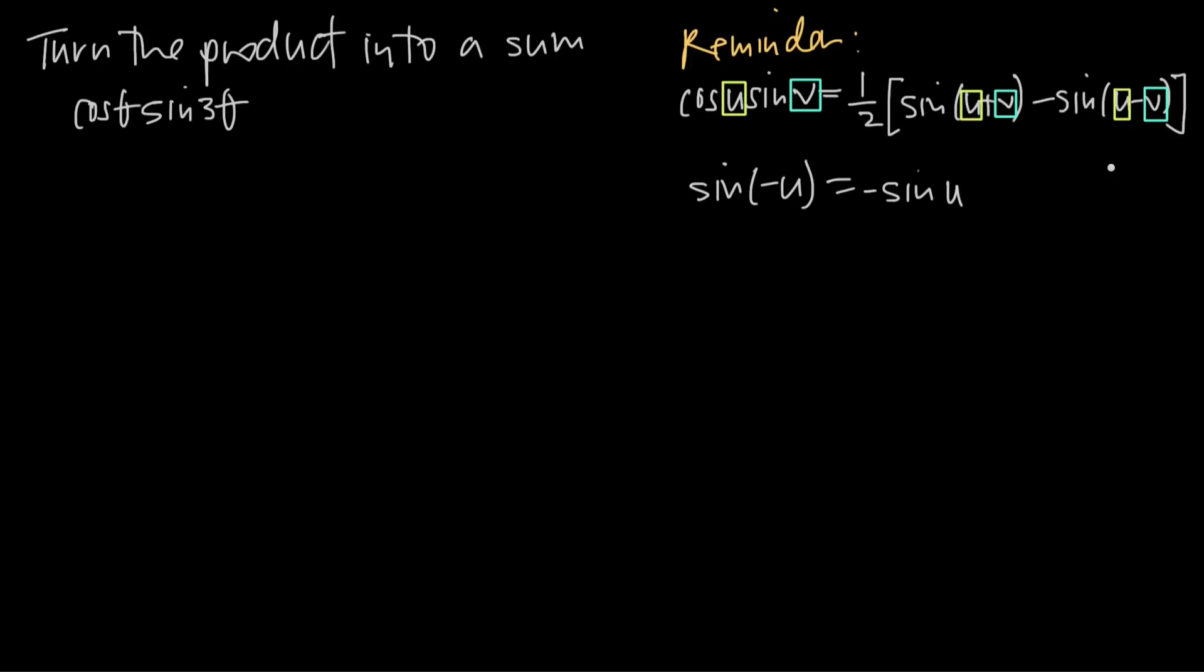So if we apply this formula to our example, cosine of theta times sine of 3 theta, we can say that this is going to be equal to, using the right hand side of our formula, 1 half multiplied by sine of u plus v. So sine of u plus v.